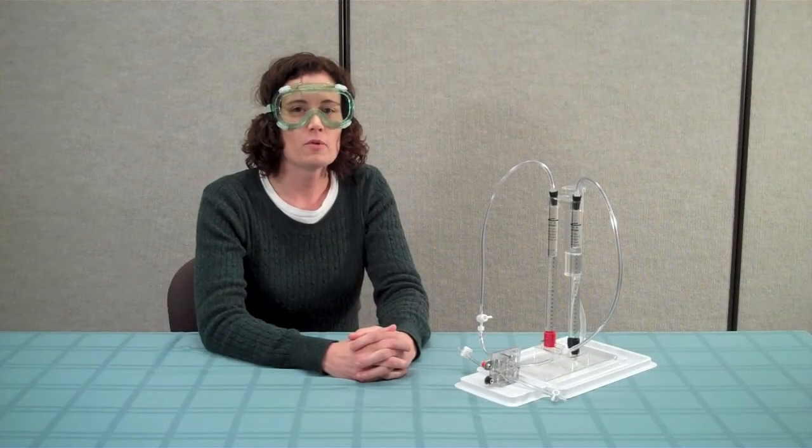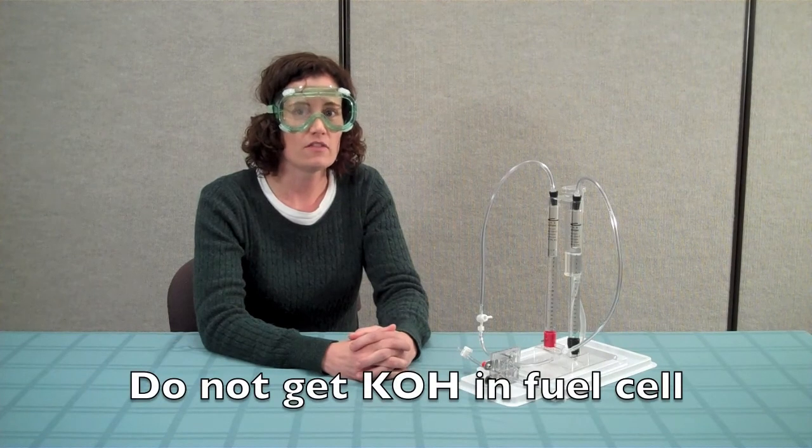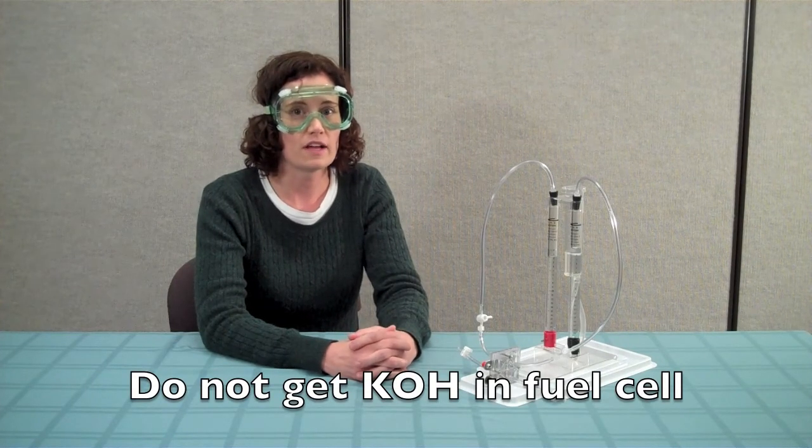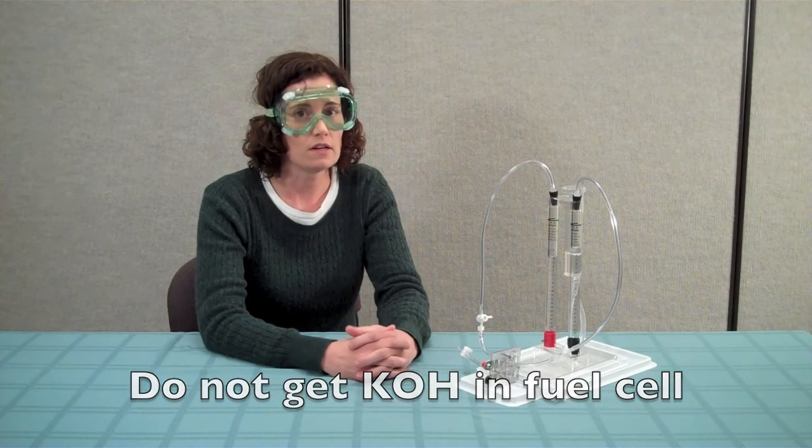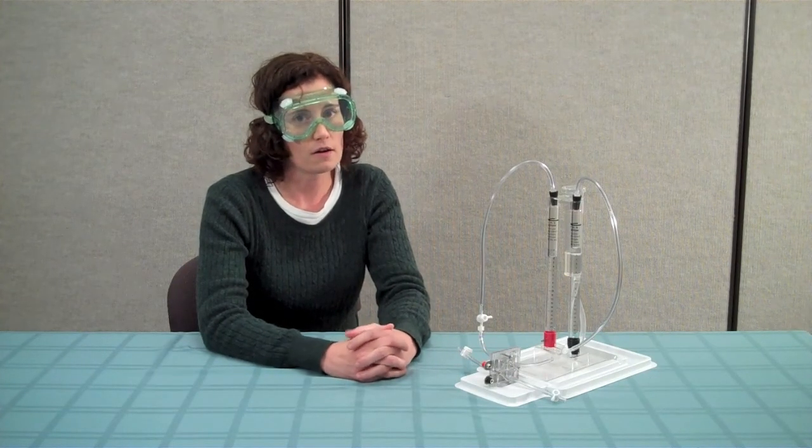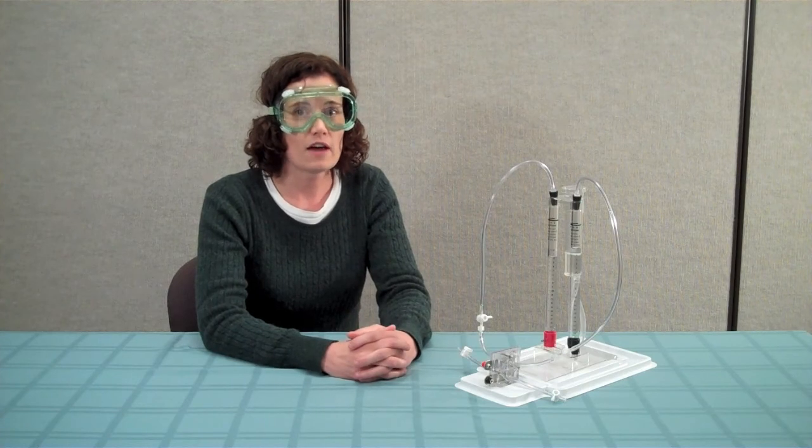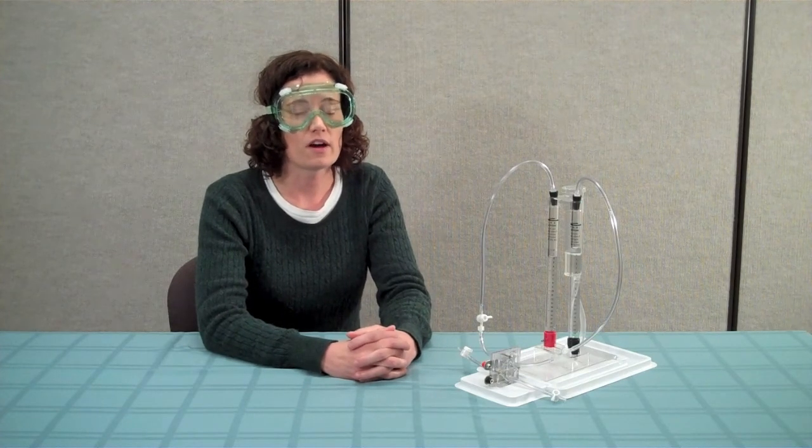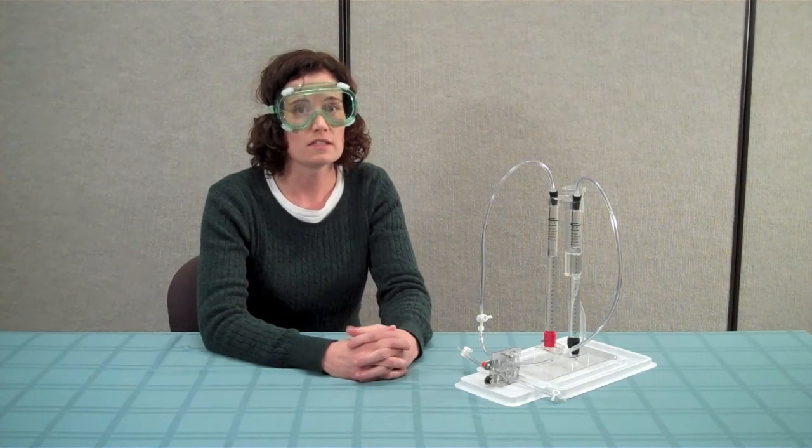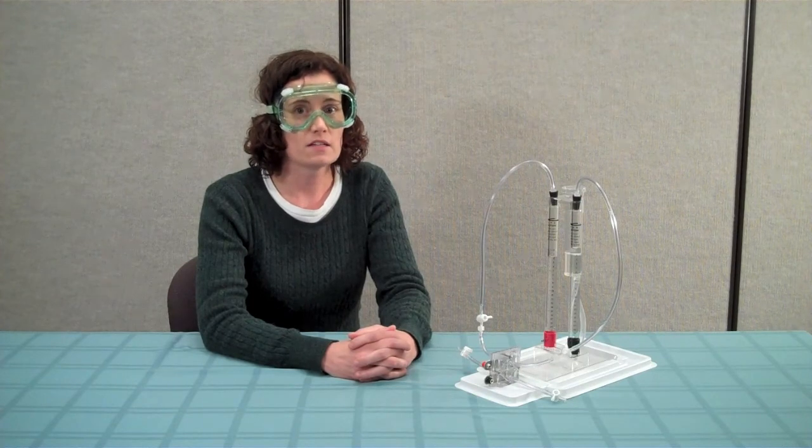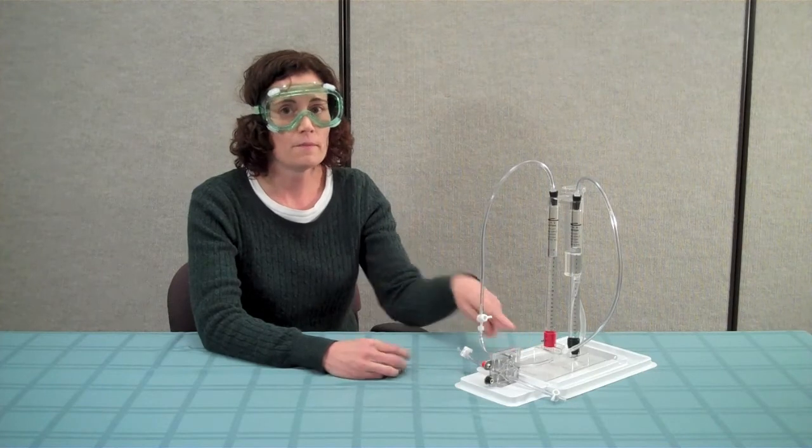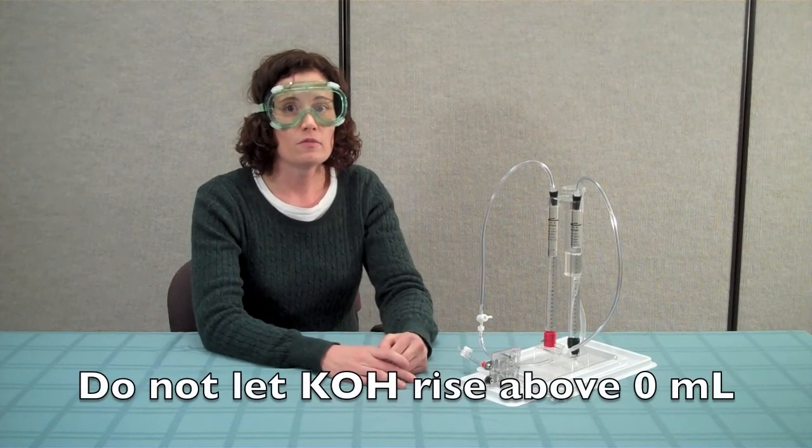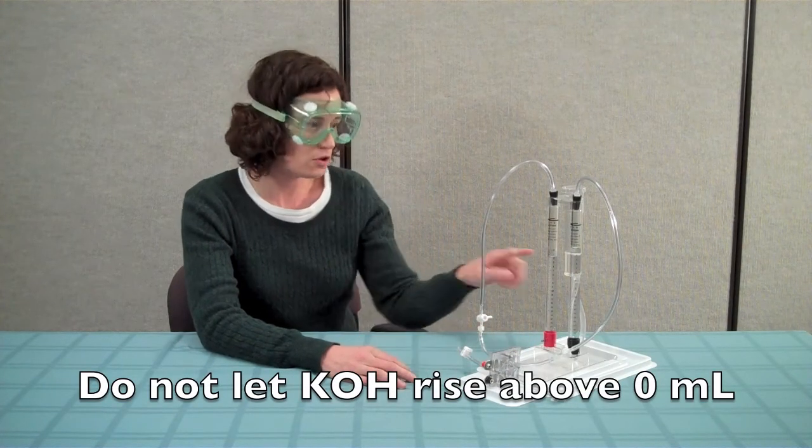The most important thing to remember when using the fuel cells is to not get any of the potassium hydroxide from the electrolyzer inside the fuel cell. If this does happen, the fuel cell will be destroyed. This can happen when you allow the fuel cell to run for too long. As the fuel cell consumes the hydrogen gas, the level of potassium hydroxide in the electrolyzer increases. If left unattended, the potassium hydroxide can be drawn up into the gas supply tube and into the fuel cell. We recommend that you not let the level of potassium hydroxide rise above the zero mark on the electrolyzer.